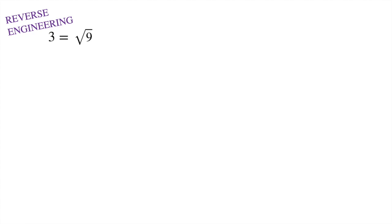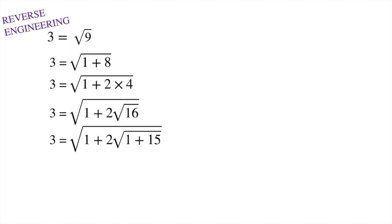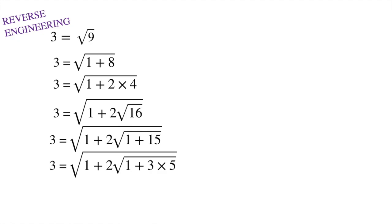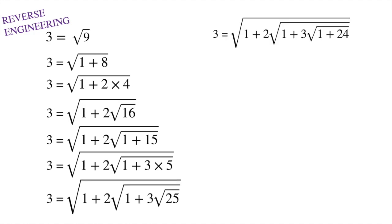If we write three as under root of nine, and nine as one plus eight, now by taking factors of eight as two times four, and writing four as under root of sixteen, and following the same steps and writing sixteen as one plus fifteen, and then fifteen as three times five. Again writing five as under root of twenty-five, and twenty-five as one plus twenty-four.